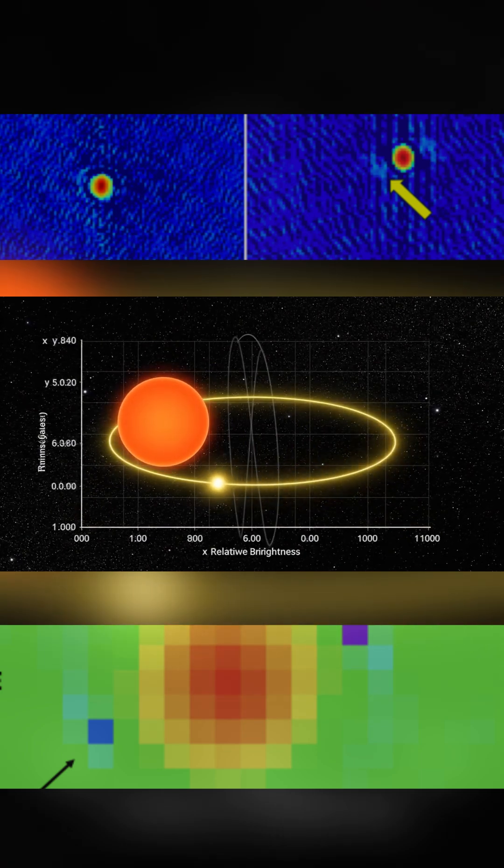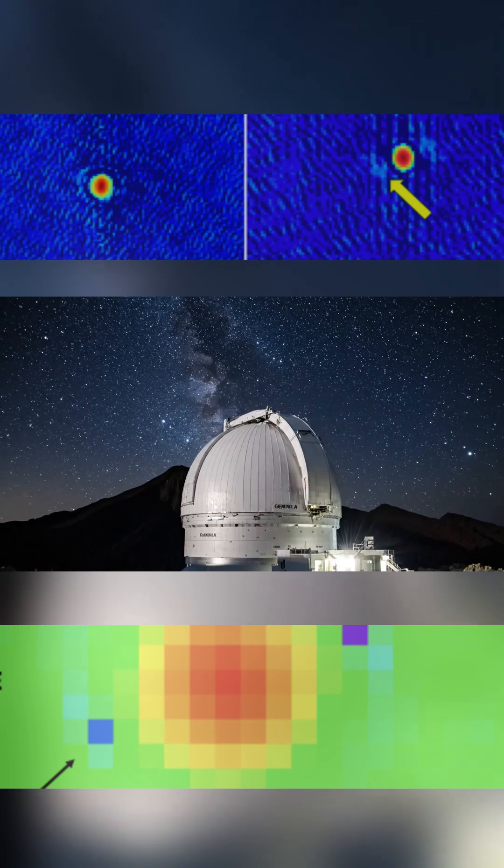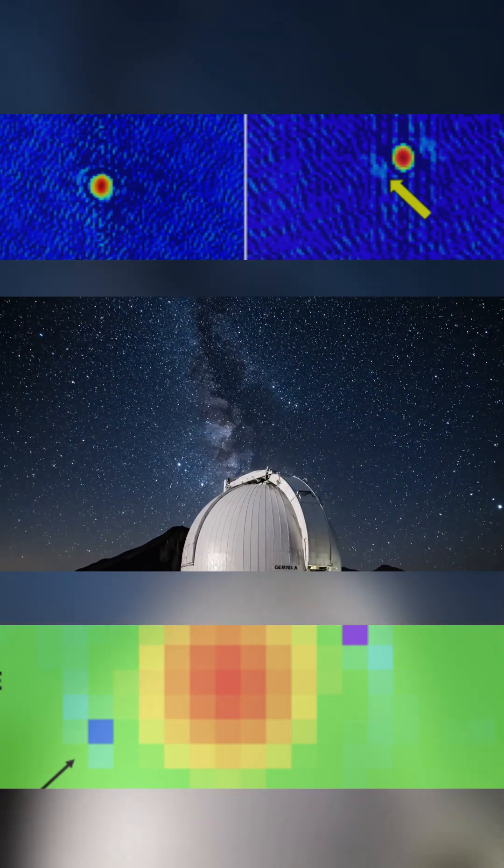Using the Gemini North Telescope in Hawaii, a faint object was detected right at the predicted position and brightness.